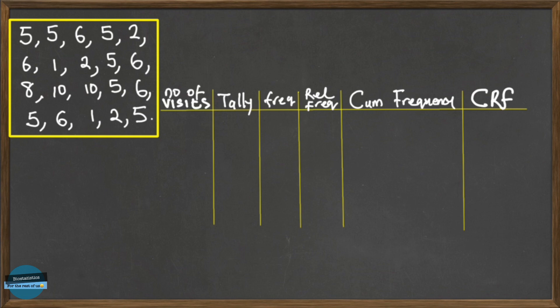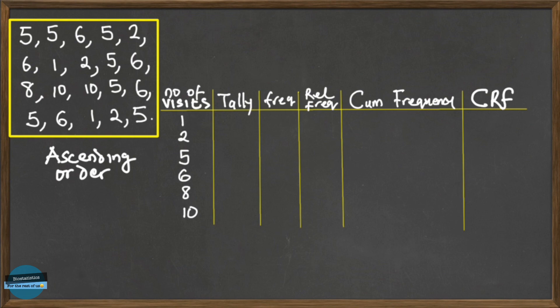When dealing with numeric variables, we arrange the values in ascending order. The number of visits ranges from a minimum of 1 visit up to 10. No patient had 3, 4, 7, or 9 visits, so our values are 1, 2, 5, 6, 8, and 10. We then fill in the tally and the corresponding frequencies.